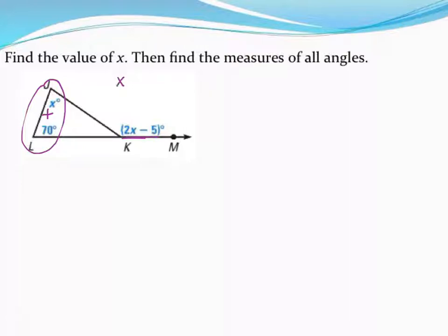So once again I'm going to add up my two interior angles and they have to be the two interior angles that are not next to the outside one. So in other words I don't want that one. So I'm going to add up my two interior angles x plus 70. I'm going to put that equal to the one exterior angle 2x minus 5.